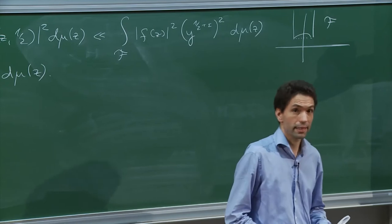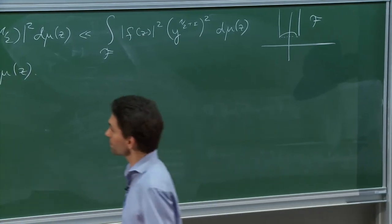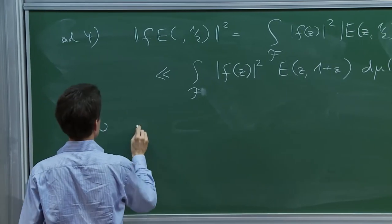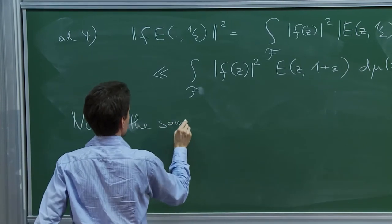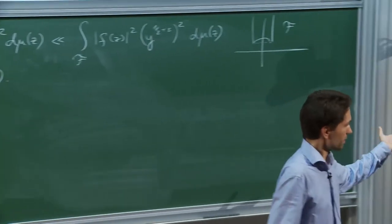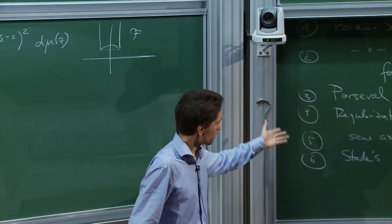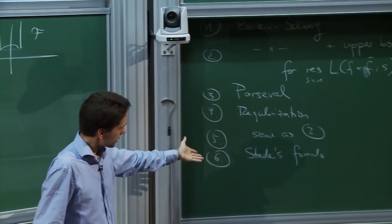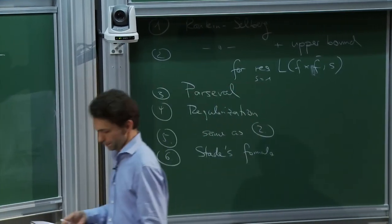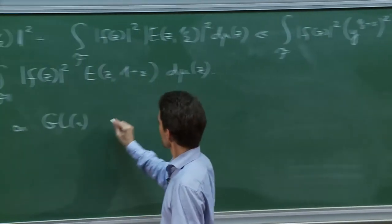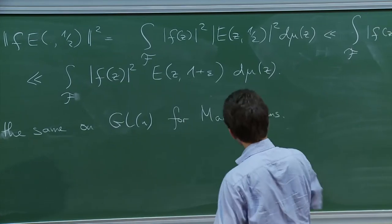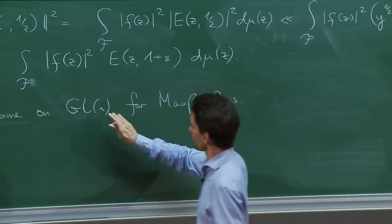So Philippe told me that this argument also plays a role in his paper with Akshay. In any case, this is how you regularize the Eisenstein series at 1/2. That completes the proof. Now this was the warm-up, the n=2 case. We have good chances to succeed in higher rank because basically we did nothing — we used Rankin-Selberg, Stade's formula, Parseval, and we have to do something about this regularization. Of course here we do it for Maass forms — there are no holomorphic forms.